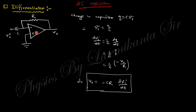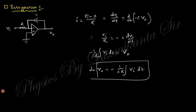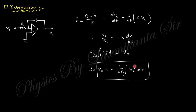For the integrator circuit, the current through the resistor is Vi/R, and this equals dQ/dt = C × d(−Vo)/dt. Rearranging: Vi/R = −C × dVo/dt, so Vo = −(1/RC) × ∫Vi dt. The output is the integration of the input voltage. This completes the Op-Amp application section of the syllabus — the next class will cover multivibrators and oscillators.